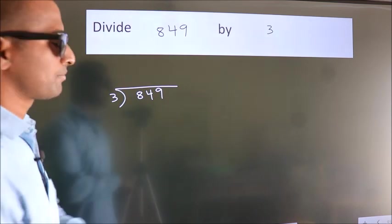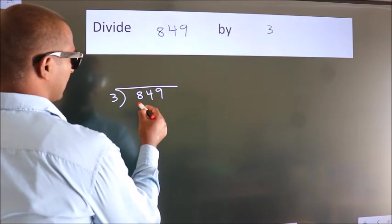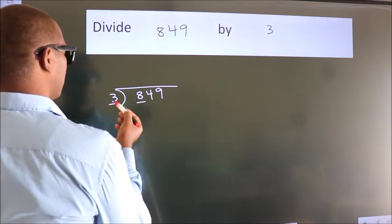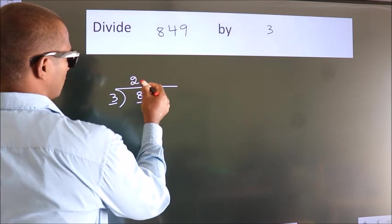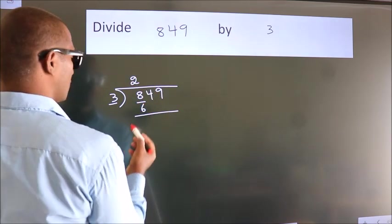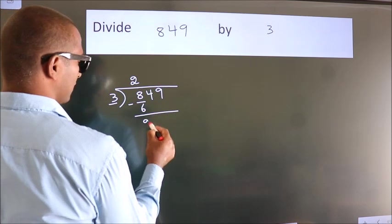Next, here we have 8, here 3. A number close to 8 in 3 table is 3 2s, 6. Now we should subtract. We get 2.